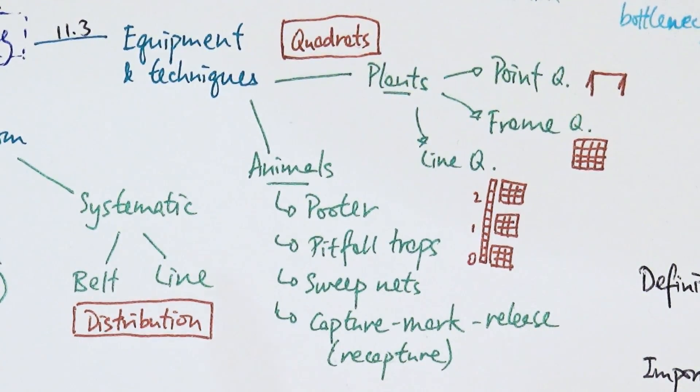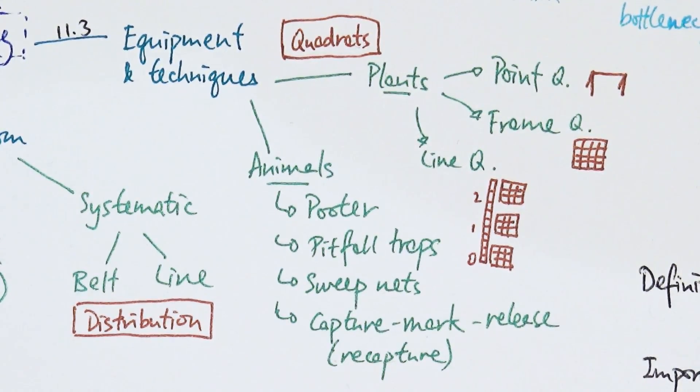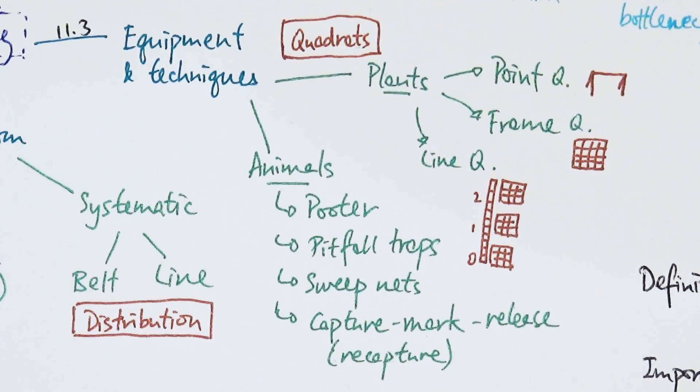Last in this part is equipment and techniques for sampling. We need different things for animals and plants, since animals can move around. Here's a list for animals: a pooter is a little container where you can suck small insects from trees into a tiny pot and count them. Pitfall traps involve digging into the ground and covering it so organisms don't drown in rain, counting insects that fall in. Sweep nets are for walking through long grass, sweeping systematically to count butterflies or beetles.